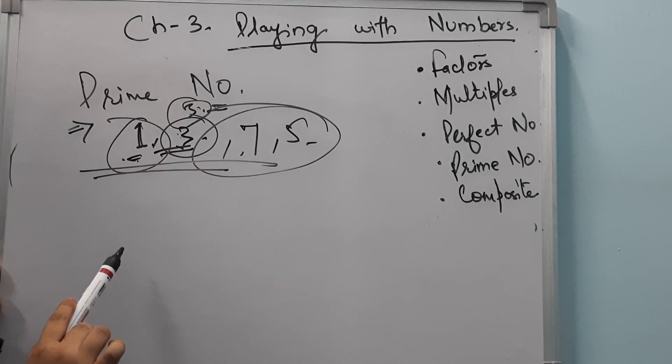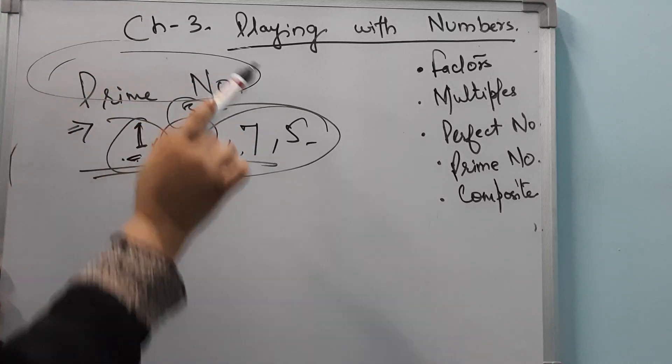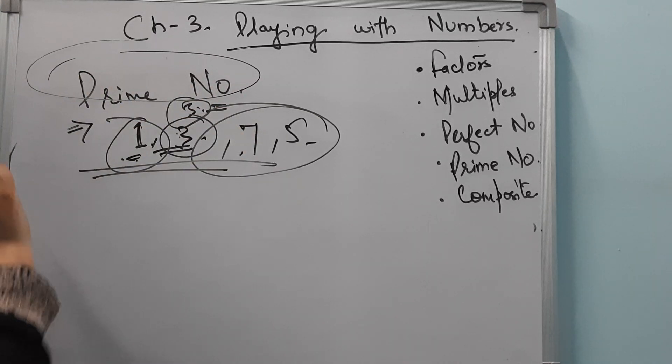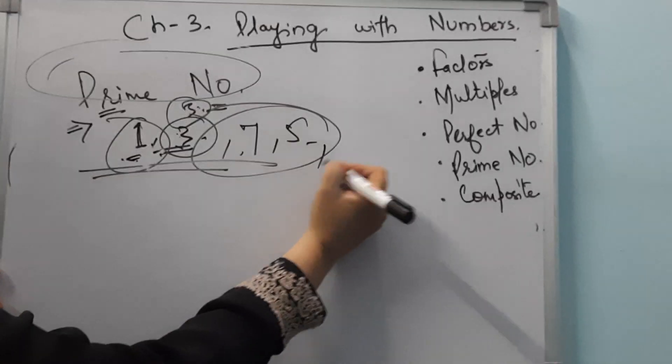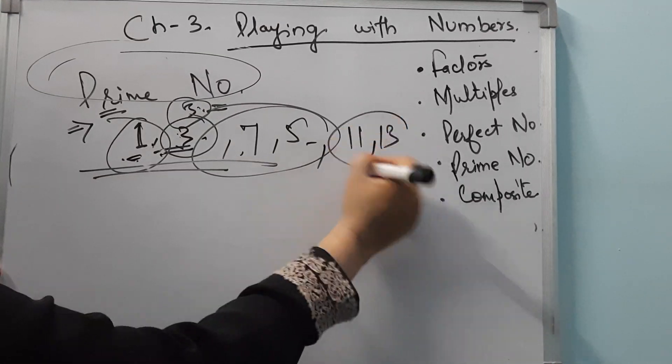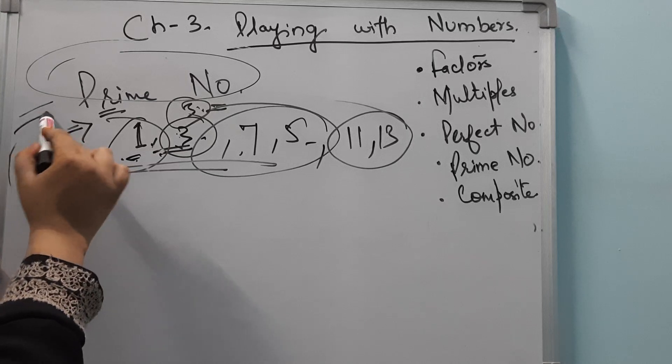A simple way to remember: if a number doesn't appear in any multiplication table (jo kisi ki table mein nahi aata hai), that is a prime number. For example, 11 and 13 don't appear in any table, so they are prime numbers.